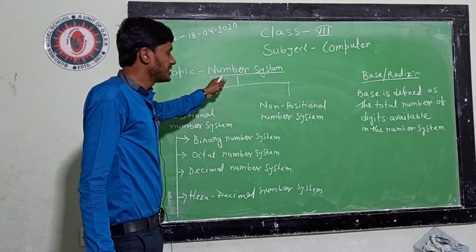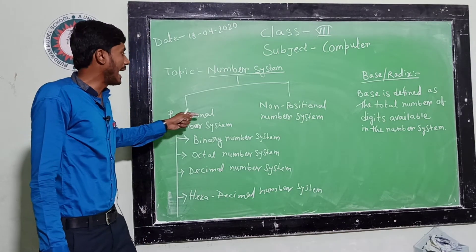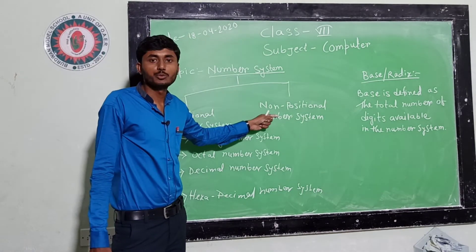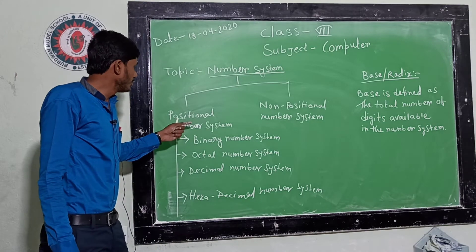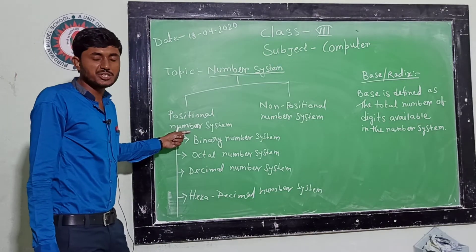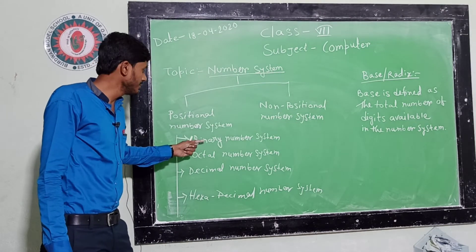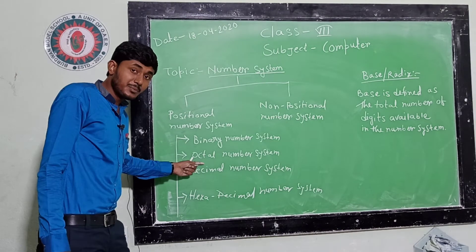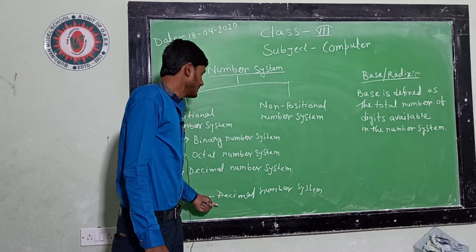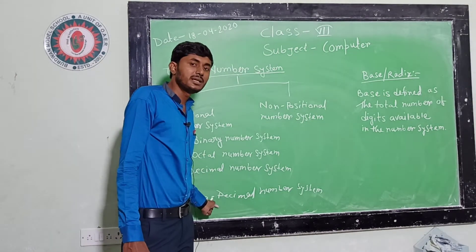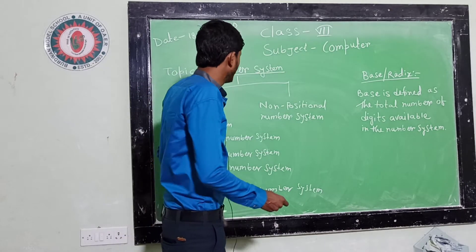Number system is basically divided into two parts: positional number system and non-positional number system. Positional number system is divided into four types: binary number system, octal number system, decimal number system, and the last one is hexadecimal number system.